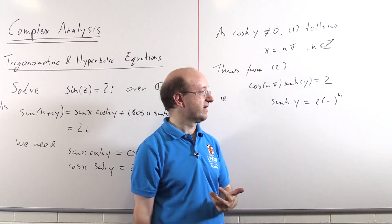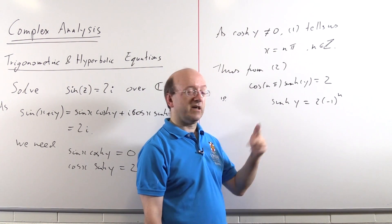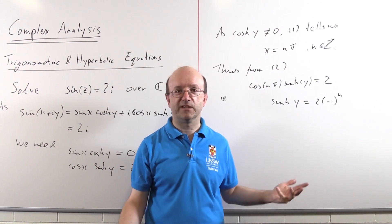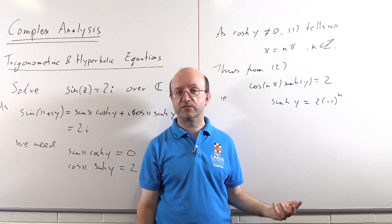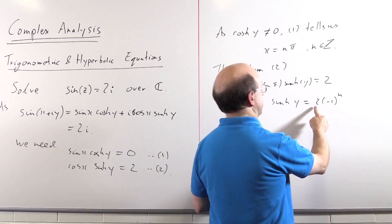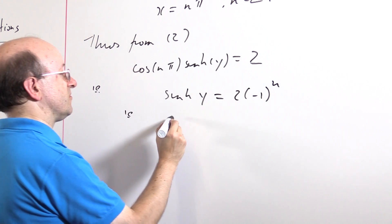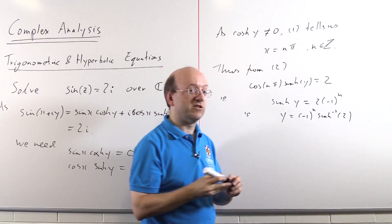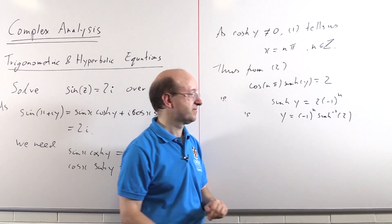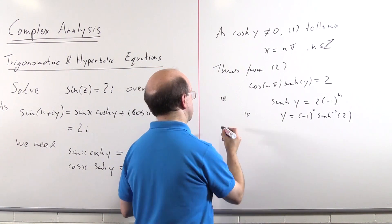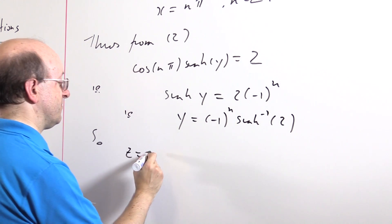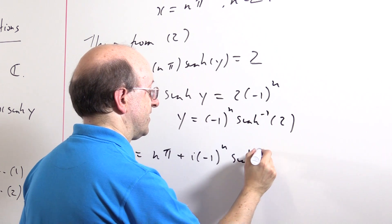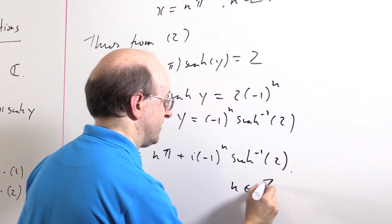And so naturally we can now just take inverse hyperbolic sines of this, and y is inverse hyperbolic sine of twice minus 1 to the n. But the hyperbolic sine is an odd function, and therefore its inverse is. So the inverse hyperbolic sine of 2 is just the hyperbolic sine of 2, whatever that is. And the inverse hyperbolic sine of minus 2 is actually minus the inverse hyperbolic sine of 2. So we can actually just take the inverse hyperbolic sine of the 2. So y is minus 1 to the n, sinh inverse of 2. It's not that sinh is linear, it's that it's odd that it allows us to do that. Well now we've finished, we just need to put everything together. So z is the real part n pi, and what we've got here, i times minus 1 to the n inverse hyperbolic sine of 2, for of course n an integer.